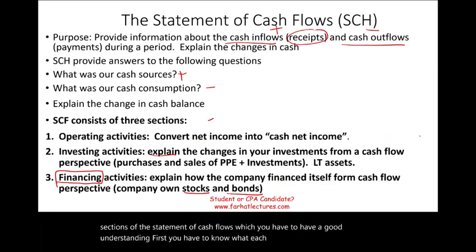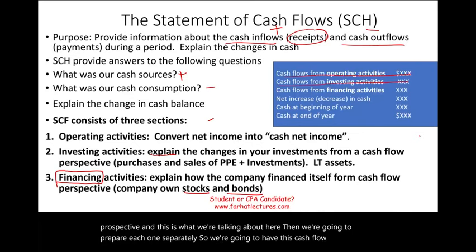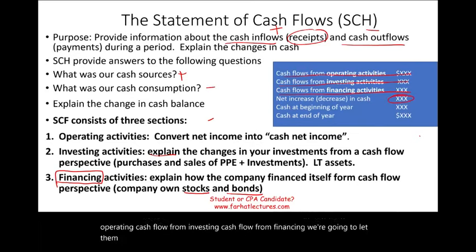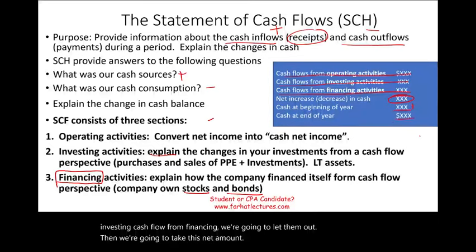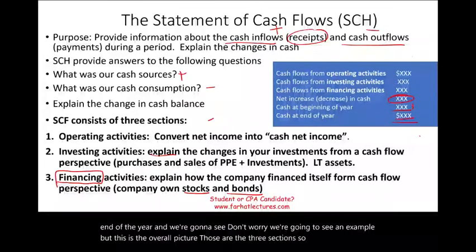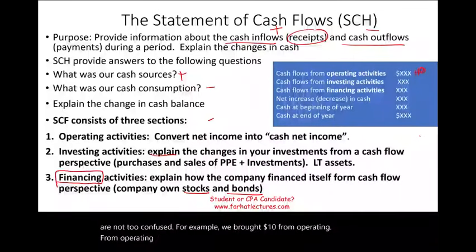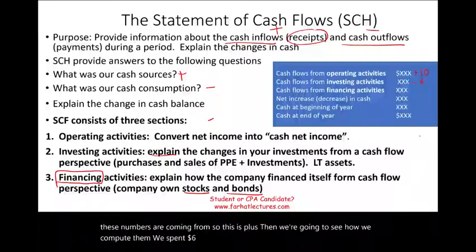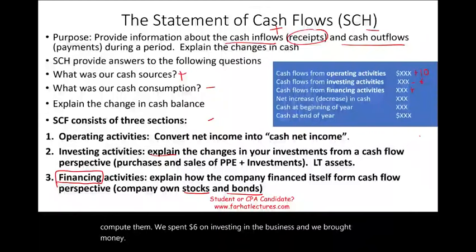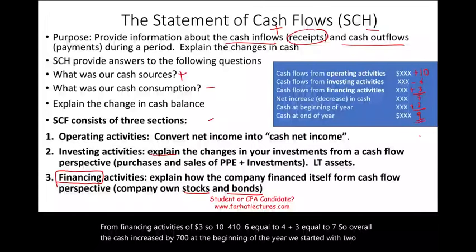You have to know what each section represents from a large perspective. We're going to prepare each one separately — cash flow from operating, cash flow from investing, cash flow from financing — then net them out, add it to the beginning of the year cash, and that gives us the cash at the end of the year. For example, we brought $10 from operating, spent $6 on investing, and brought $3 from financing. So 10 minus 6 plus 3 equals 7 — the cash increased by 7. Starting with $2 in cash, we end up with $9.